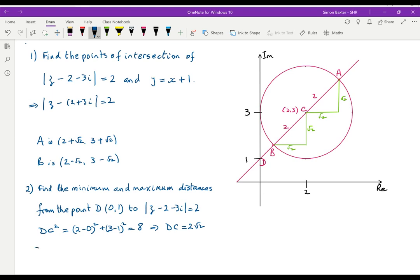Therefore, the minimum distance is DB, which is 2 root 2 minus 2, and the maximum distance is DA, which is 2 root 2 plus 2.